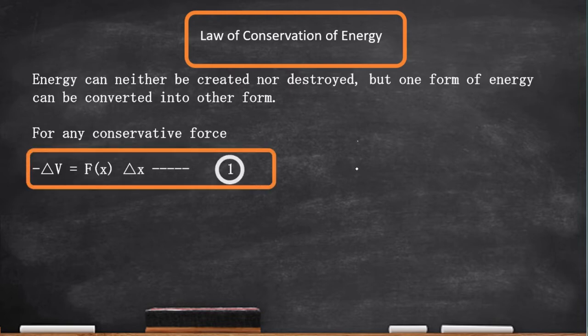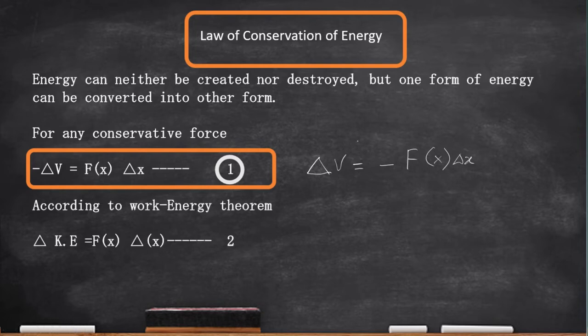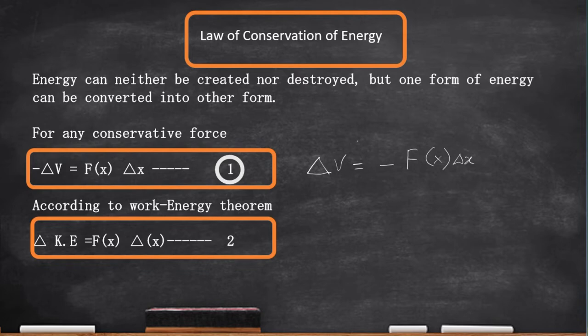Or, this equation can also be written as ΔV = -F(x)Δx. We know from work-energy theorem, the kinetic energy difference is equal to work done.